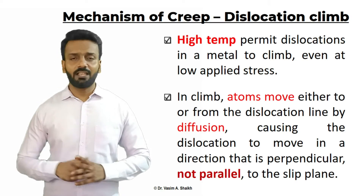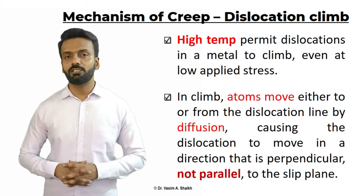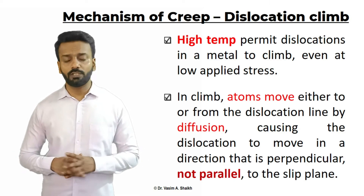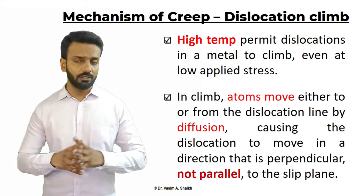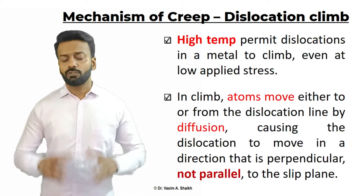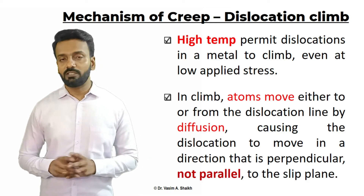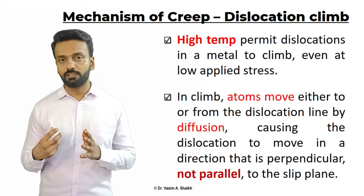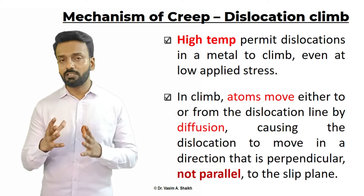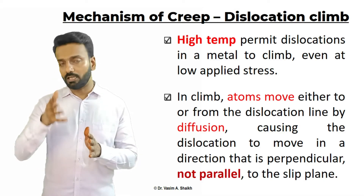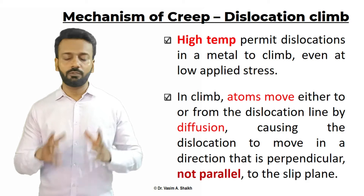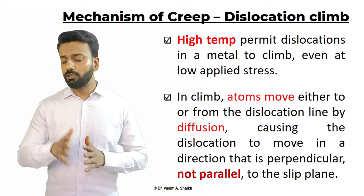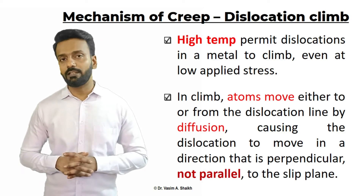The first mechanism of creep is dislocation climb. As the temperature of the material increases, the dislocation tends to move in a certain direction even when the load applied to the material is very less. In dislocation climb, atoms move either towards the dislocation or away from the dislocation. It appears as if the dislocation is climbing up or down, and this happens because of diffusion — the dislocation will move in a perpendicular direction and not in a parallel direction.